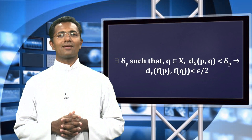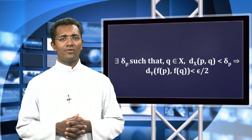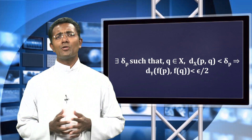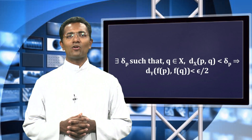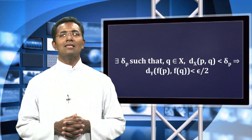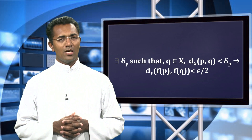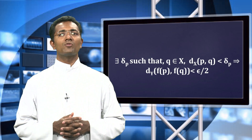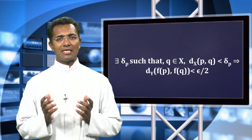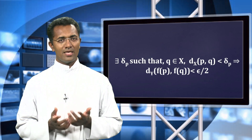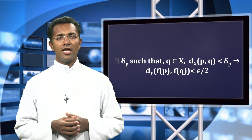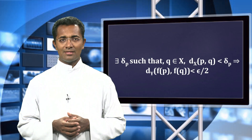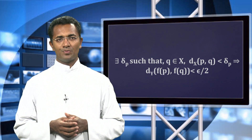As f is given as a continuous function, for some point p belonging to X, let delta_p greater than 0 be found such that for q belonging to X, if the distance between p and q is less than delta_p, then the distance between f(p) and f(q) is less than epsilon over 2. Let us put this as equation number 1.